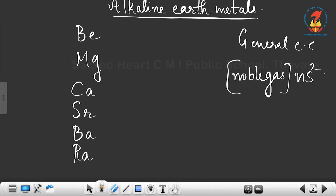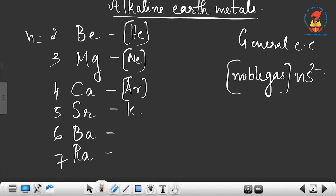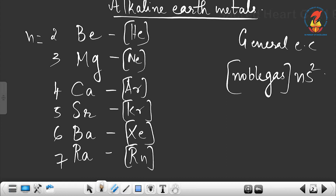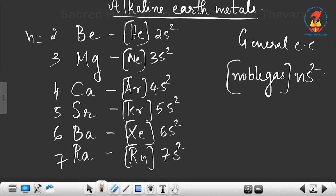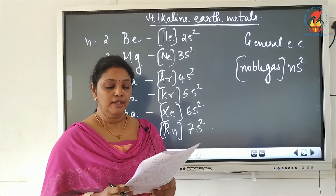Here n stands for the period number. Beryllium is in the second period, then third, fourth, fifth, sixth, and seventh period. The noble gases are helium, neon, argon, krypton, xenon, and radon, and the outer configurations are 2s², 3s², 4s², 5s², 6s², and 7s².